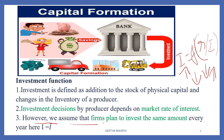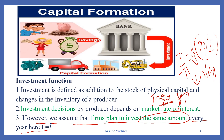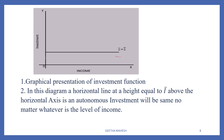For our analysis, we assume that producers plan to invest the same amount every year. This is called autonomous investment, where investment is kept constant regardless of income level.